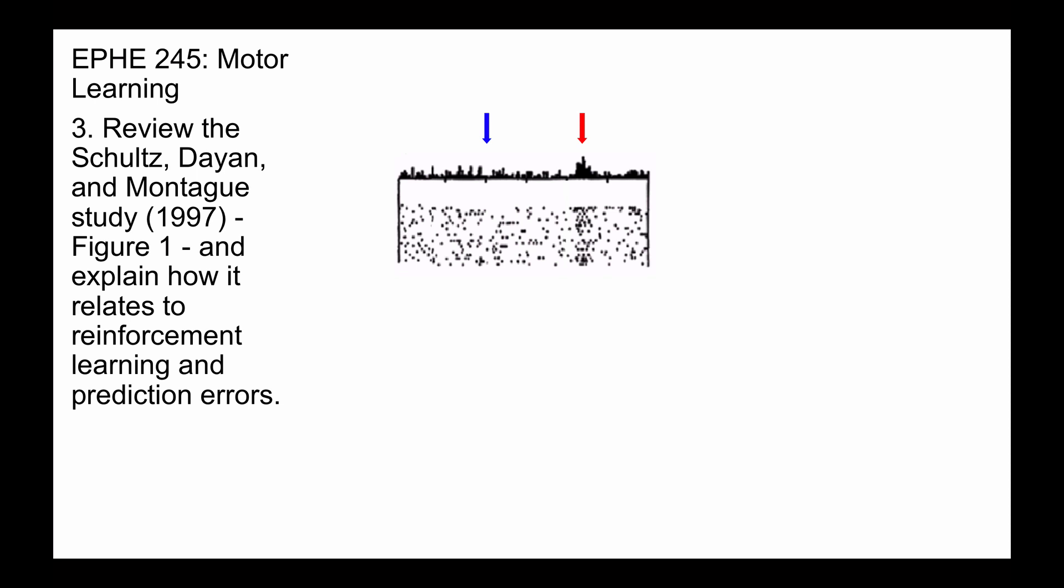But the cue did not elicit any change in firing rate. Now here the cue is the blue arrow, and that's when the tone occurred, and the red is the outcome, or reward, and as we said, it elicited an increase or phasic change in firing rate.